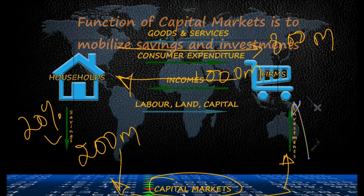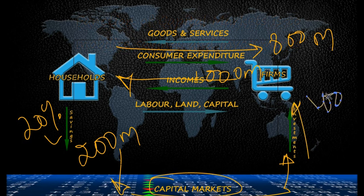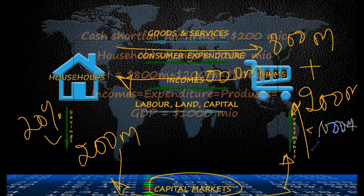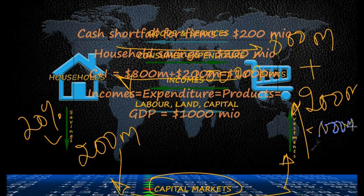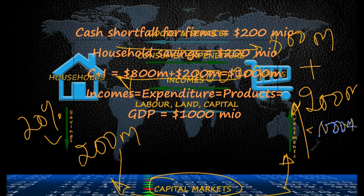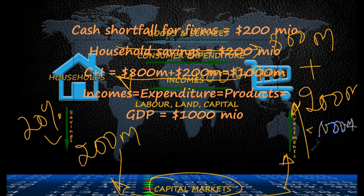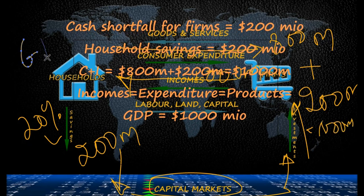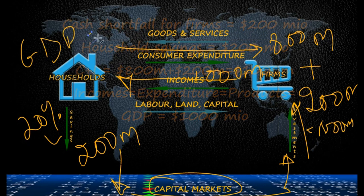So in this slightly more realistic scenario, with the addition of savings and investments, we see that firms need to borrow for investments to fund the cash shortfall and receive consumer expenditure from households. Firms pay out incomes, and households receive incomes and pay out consumer expenditure plus savings.